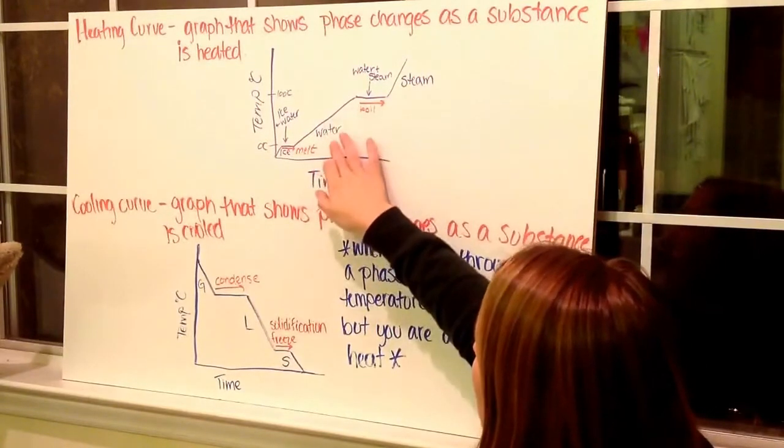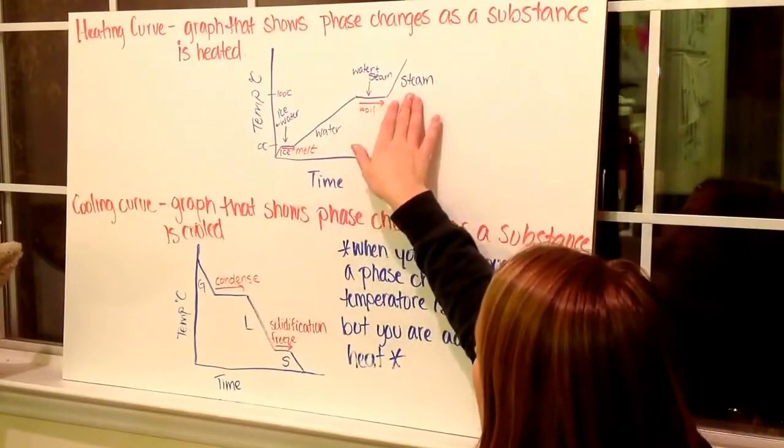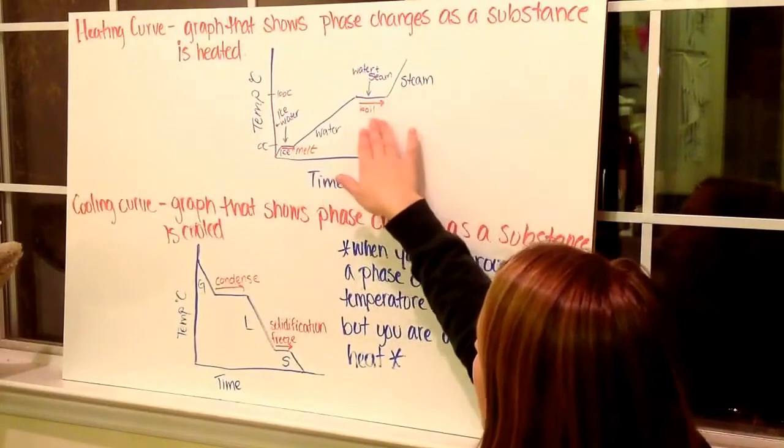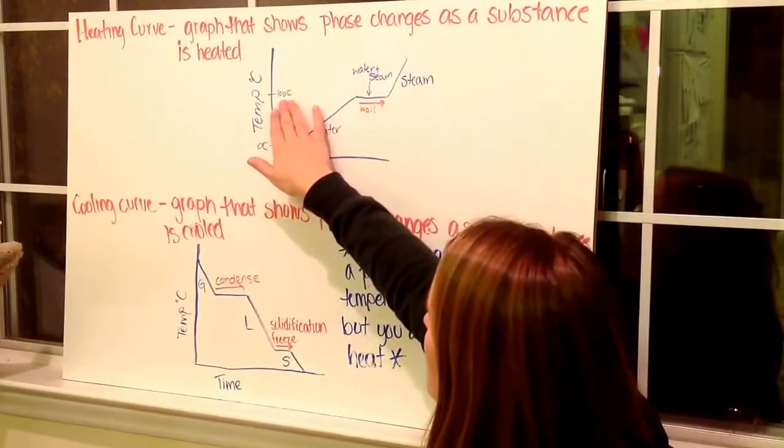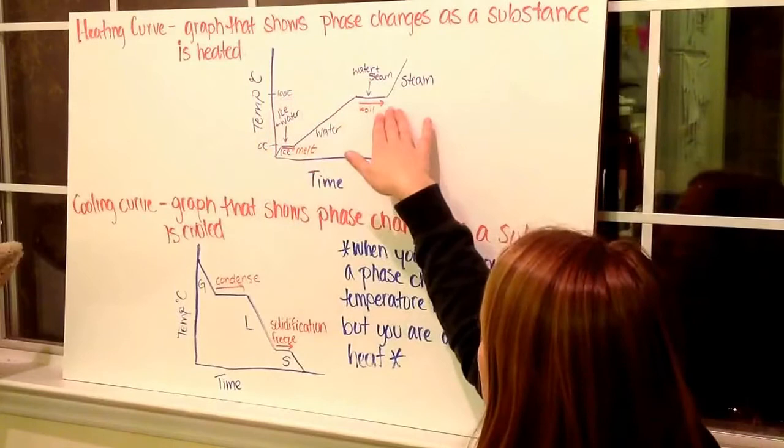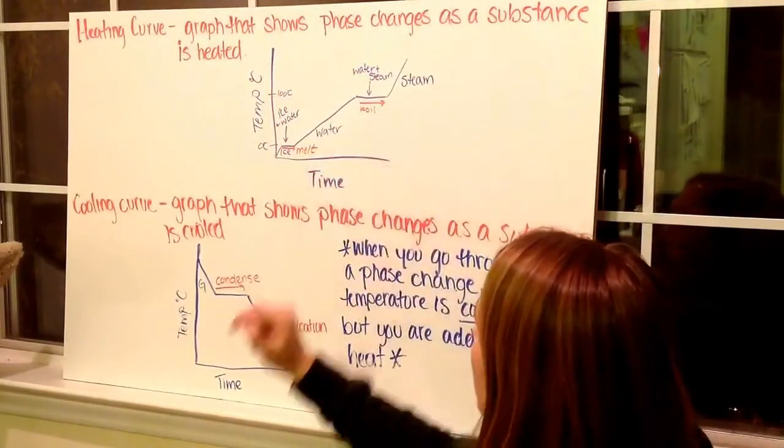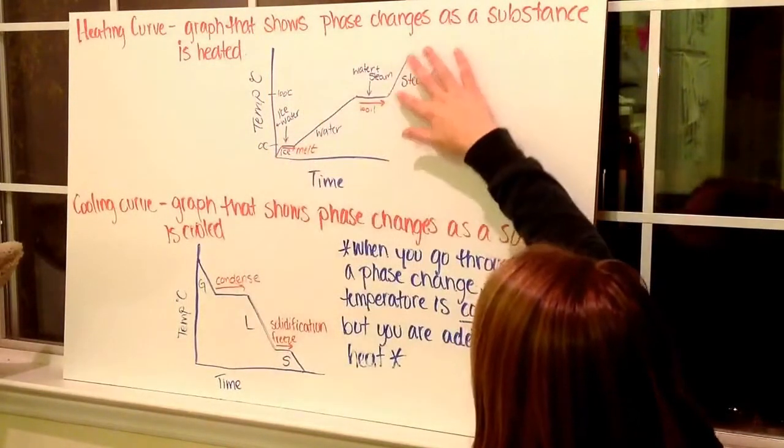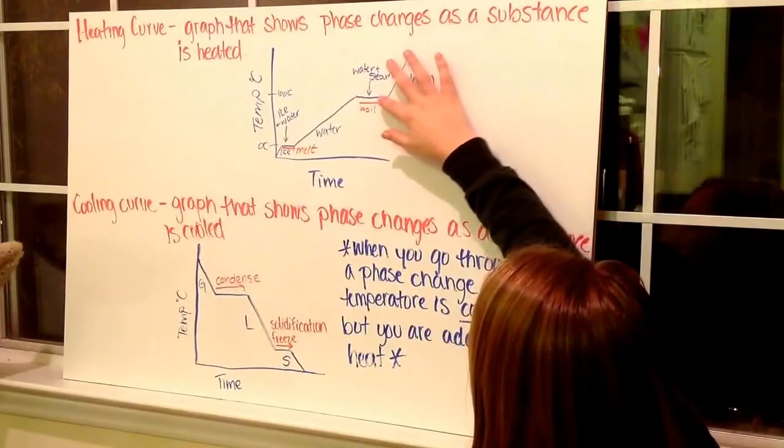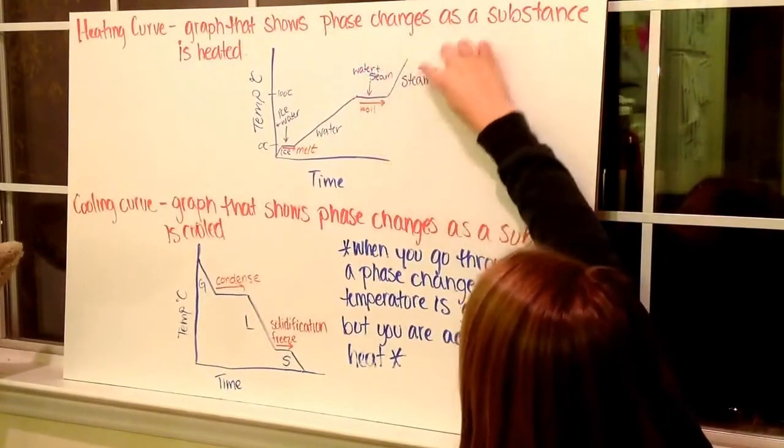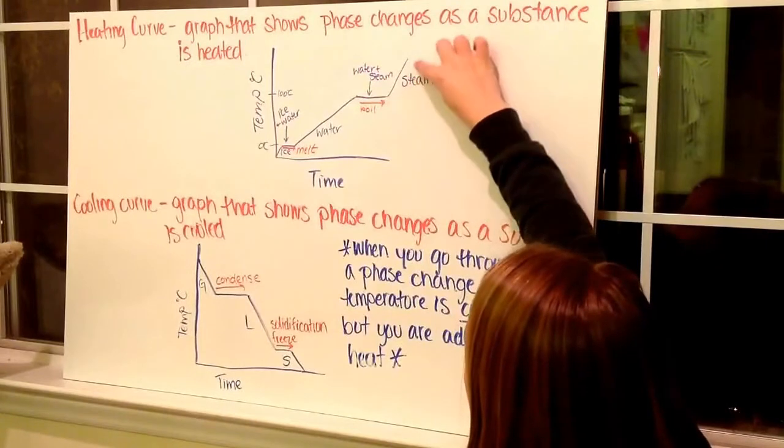Here, because we're going from a liquid to a gas, so water to steam, it's now boiling at the temperature of 100 degrees Celsius, which is constant, and just the time changes. And then it starts to increase again from water and steam, which exists at the flat line, up to steam and it stays as steam.